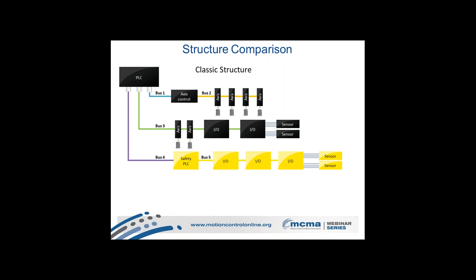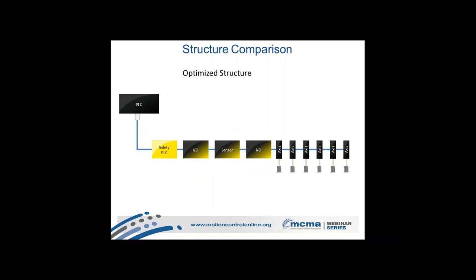This allows you to collapse a typical multi-bus machine architecture into a single network. A typical machine today might have separate buses for motion control, IO, and safety communications, all with different requirements. By having only one network, you don't have to debug or commission many buses. It becomes much easier to synchronize timing between components, and you end up with a system that's very easy to diagnose and maintain.